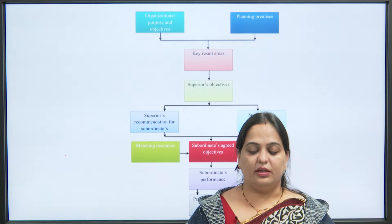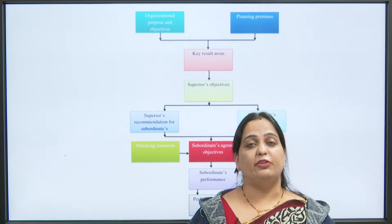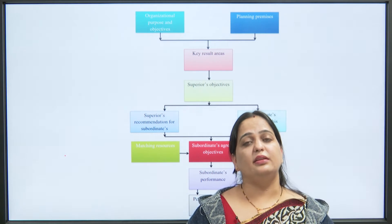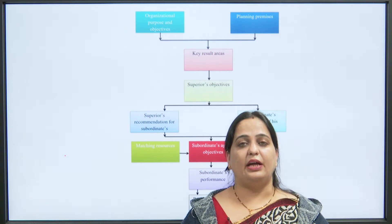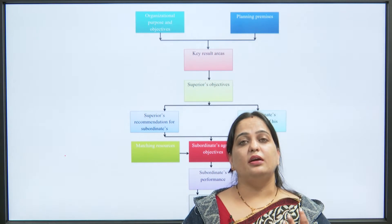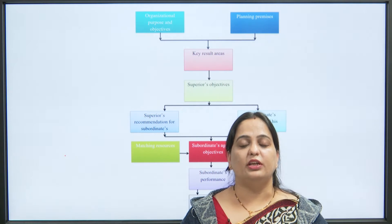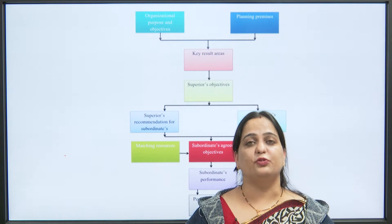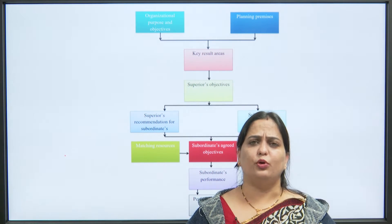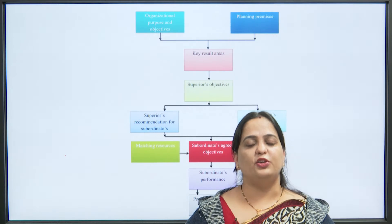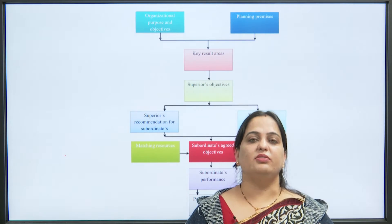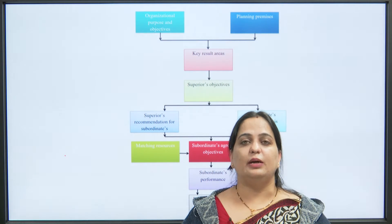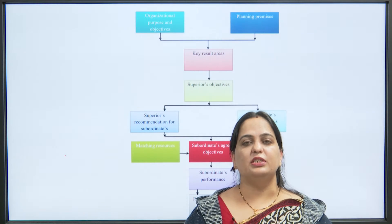Step 3 is subordinates' objectives. Once we are clear with organizational objectives and key result areas, the next step is to assign or establish subordinates' objectives. Here, both parties — management and employees — sit together, ask about problems, discuss things, ask for input in decision making, and have a joint consultation. The objectives are then set according to the employees' opinions and thought processes, meaning employees have a say in setting their own objectives.